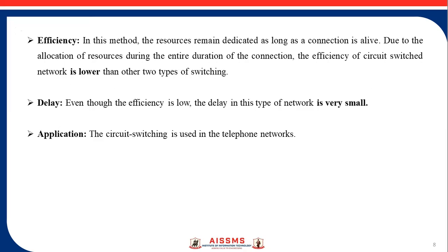Regarding efficiency: in this method, the resources remain dedicated as long as the connection is alive. All resources between the sender and receiver are reserved for the duration of the connection. Due to the allocation of resources during the entire duration of the connection, the efficiency of a circuit switched network is lower. Regarding delay: even though the efficiency is low, the delay in this type of network is very small, because once the connection is established, all data from node A can be transferred to node B at once. The application of circuit switched networks is mostly in telephone networks.